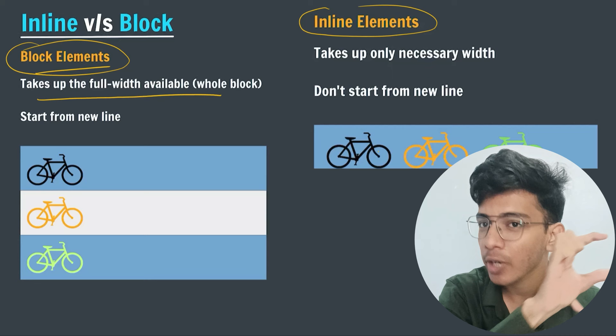Inline elements generally don't start from a new line unless the content takes up the full width. As shown in the diagram: if you create a block element, even though the content takes little space, it takes the entire line and the next element comes on the next line. Block elements occupy the entire width irrespective of content size, whereas inline elements take only the necessary space and the next element comes right after.